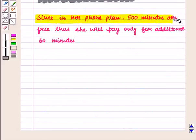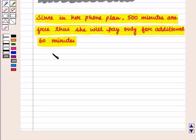From the question it is given that in her phone plan 500 minutes are free. Thus she will pay only for additional 60 minutes. So we put x = 60 in the equation y = 0.30x + 39.95.